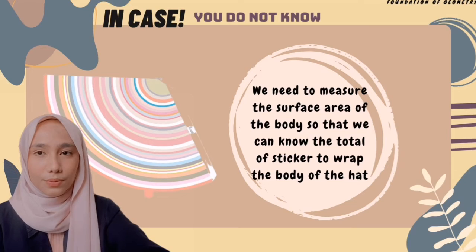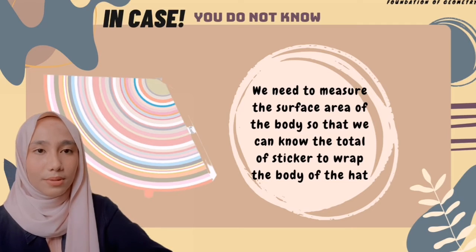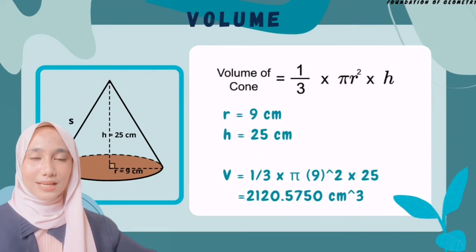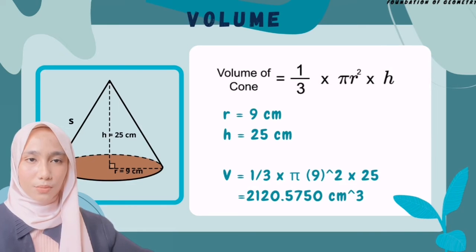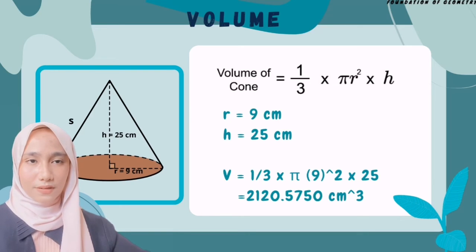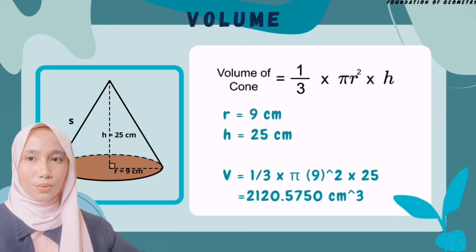In case you are wondering, we need to measure the surface area of the cone so that we can know the total amount of sticker needed to wrap the body of the hat. Next, we calculate the volume of the cone. The volume of a cone = (1/3)πr²h, where r = 9 and h = 25. So the volume = (1/3) × π × 9² × 25 = 2120.5750 cm³.